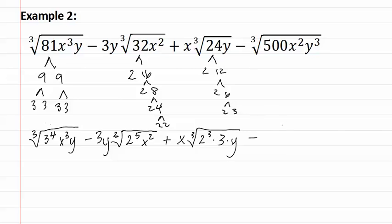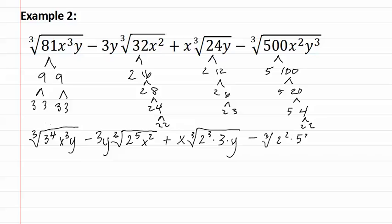The last term has five hundred, which is five times one hundred, five times twenty, five times four, and two and two. This gives us the cubed root of two squared times five cubed x squared y cubed.